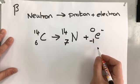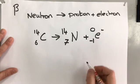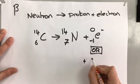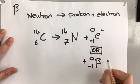Again, you can write this as an electron, or you can write it as zero minus one, a beta particle.